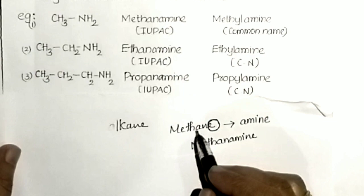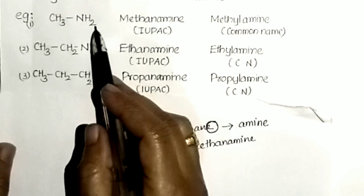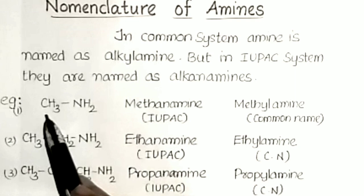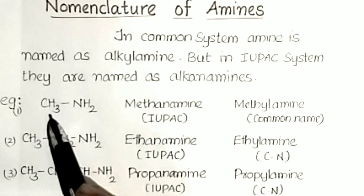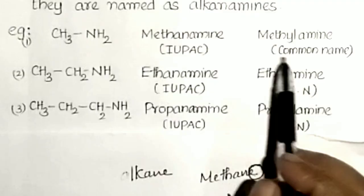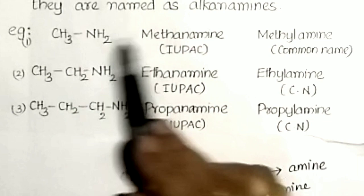The IUPAC name is important for board exams. For example, CH3NH2: count one carbon atom, so it is methane; methane's 'e' is replaced by 'amine' to give methanamine. Common name is methylamine. For CH3CH2NH2 with two carbon atoms: ethane gives ethanamine; common name is ethylamine.